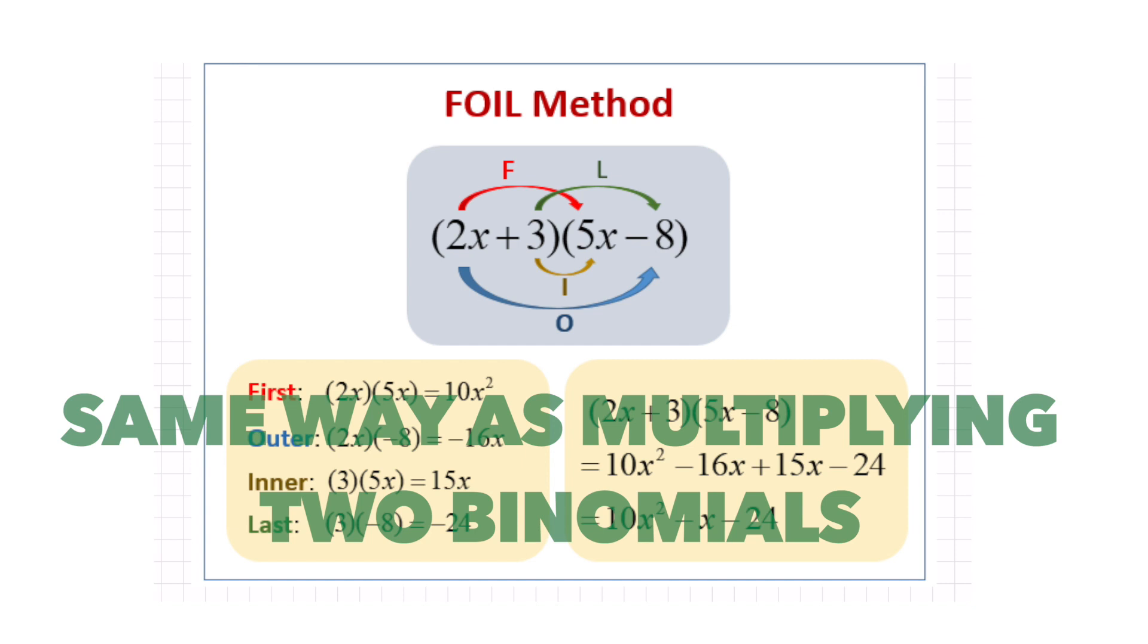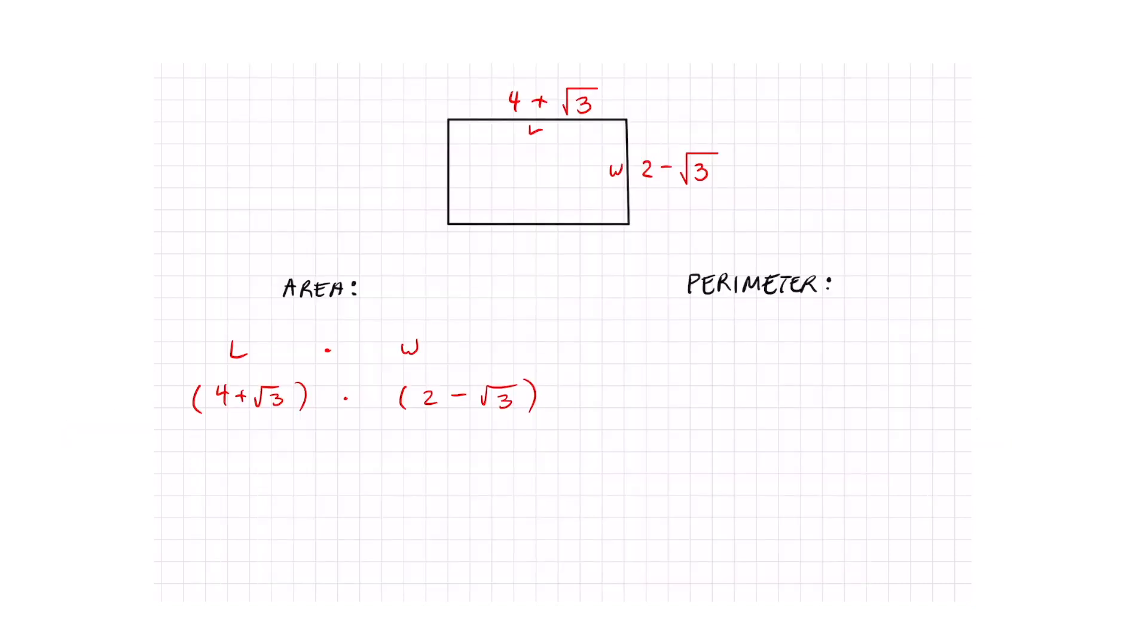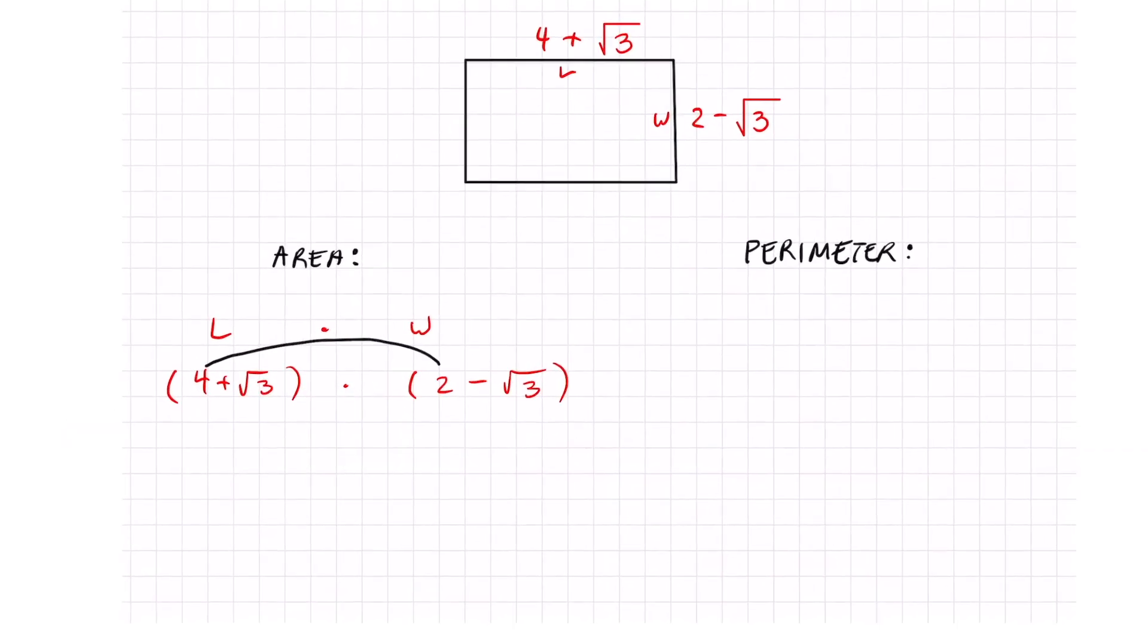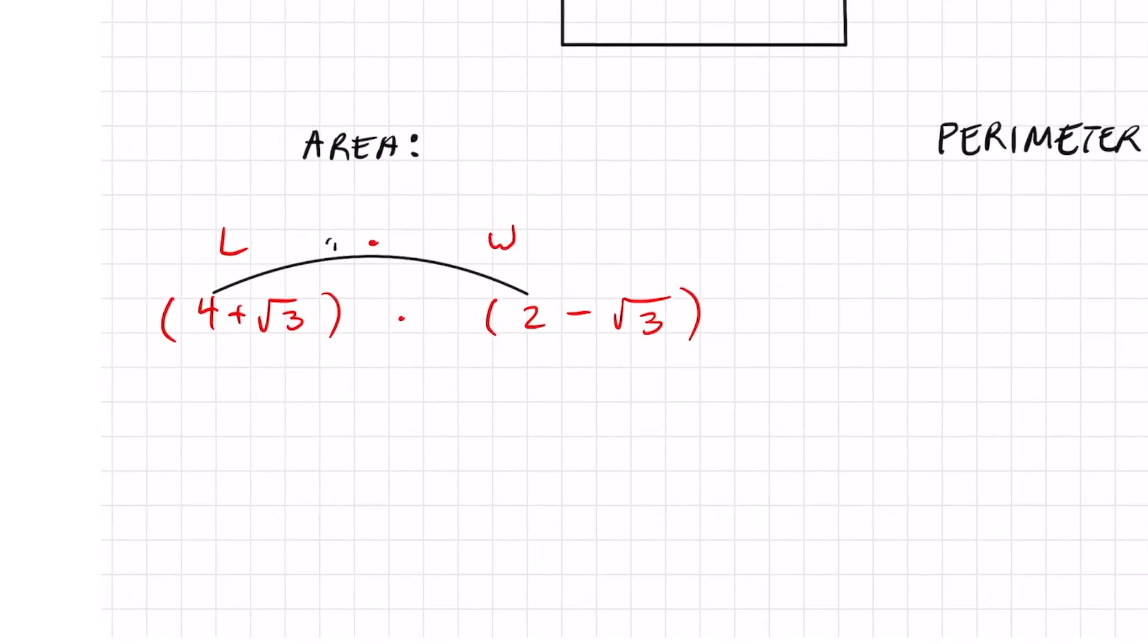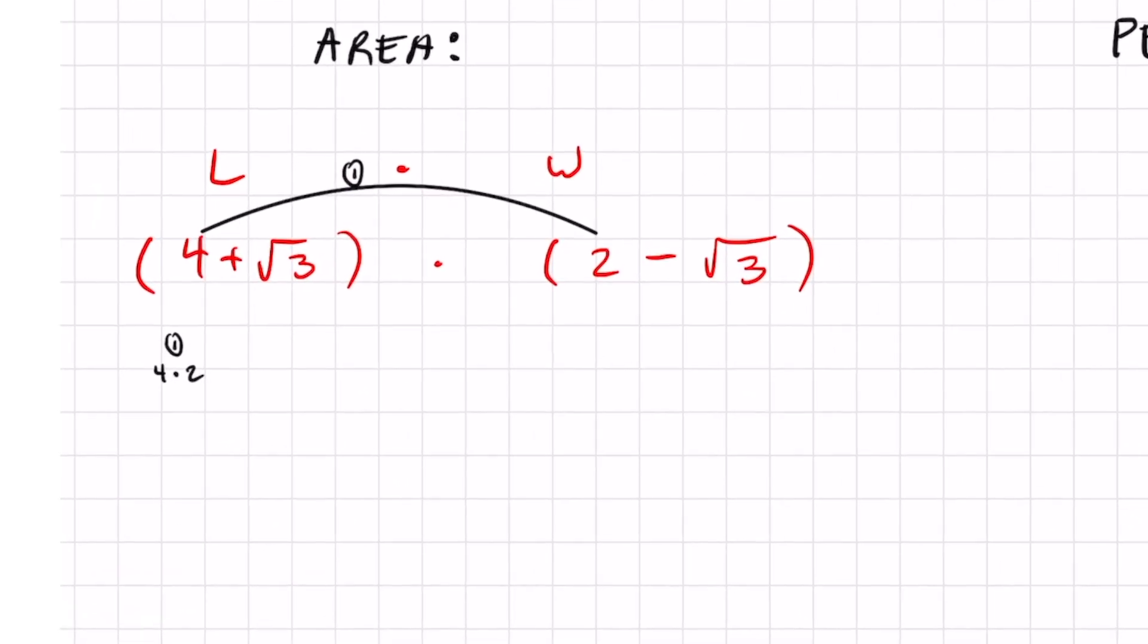There's going to be four sets of multiplication that will happen starting with 4 times 2. That's the first set of multiplication. 4 times 2 gets me 8.